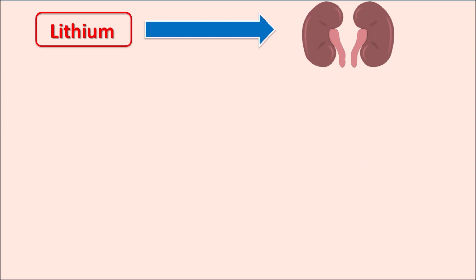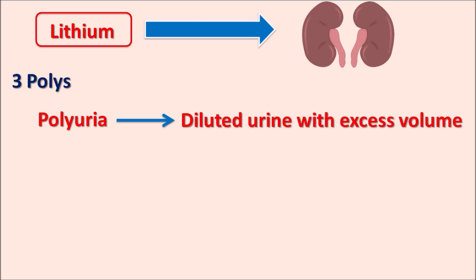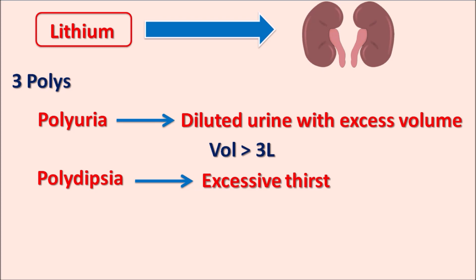Lithium can produce three 'polys' in patients. First is polyuria — diluted urine with excess urinary volume, similar to what is observed in diabetes insipidus, where adult urinary volume may exceed three liters. Second is polydipsia — since more water is excreted in urine, decreased body water leads to increased thirst. Third, lithium can also produce polyphagia, or increased appetite, which may result in weight gain.